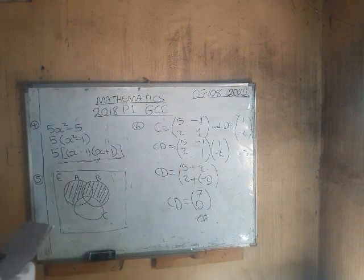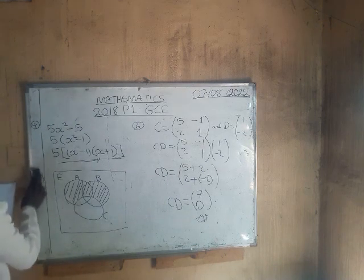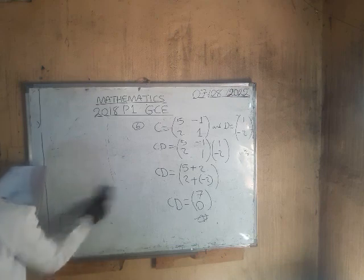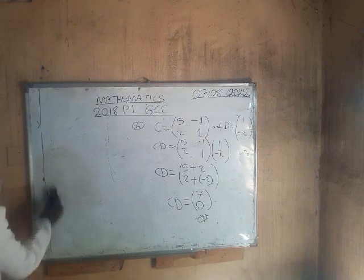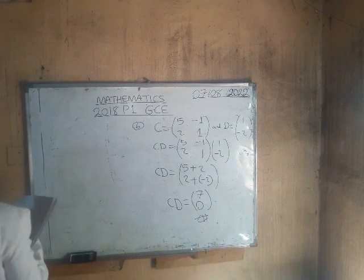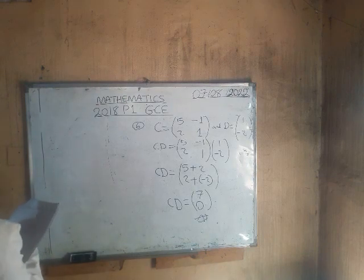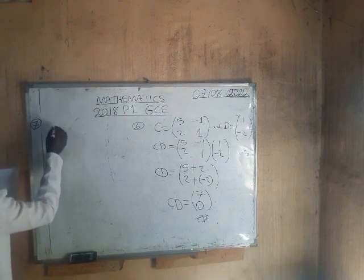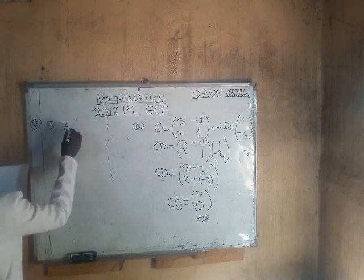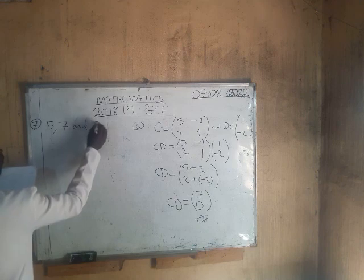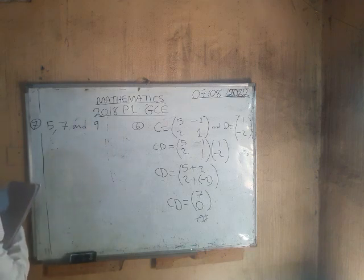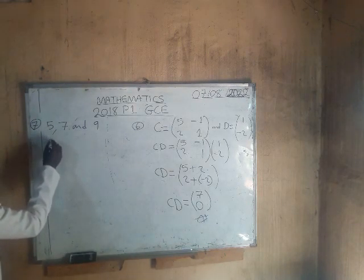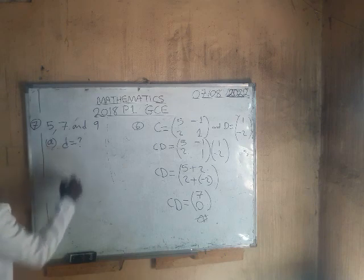Question 7 is under arithmetic progression. The first three terms of an arithmetic progression are 5, 7, and 9. Part A: find the common difference. The common difference is denoted by D, and to find it we apply the formula T2 minus T1, which should equal T3 minus T2.